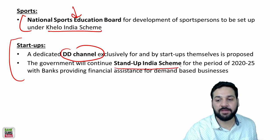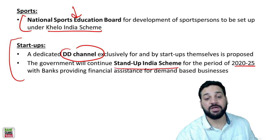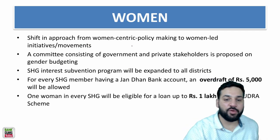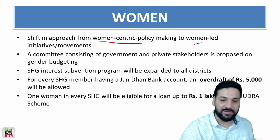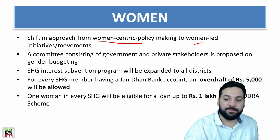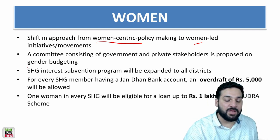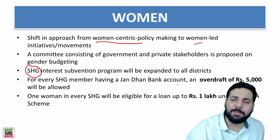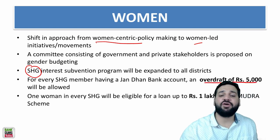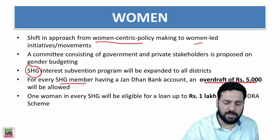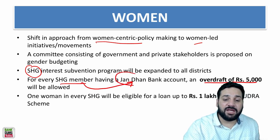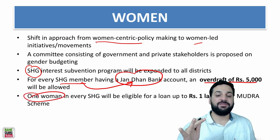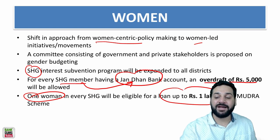For startups, a dedicated DD channel will be started. The government will continue the Stand Up India scheme from 2020 to 2025, with banks providing financial assistance for demand-based businesses. For women, there is a shift from women-centric to women-led policies. A committee of government and private stakeholders on gender budgeting is proposed. Every self-help group member with a Jan Dhan account will get an overdraft facility of 5,000 rupees, and one member per group will be eligible for loans up to 1 lakh under the Mudra scheme.